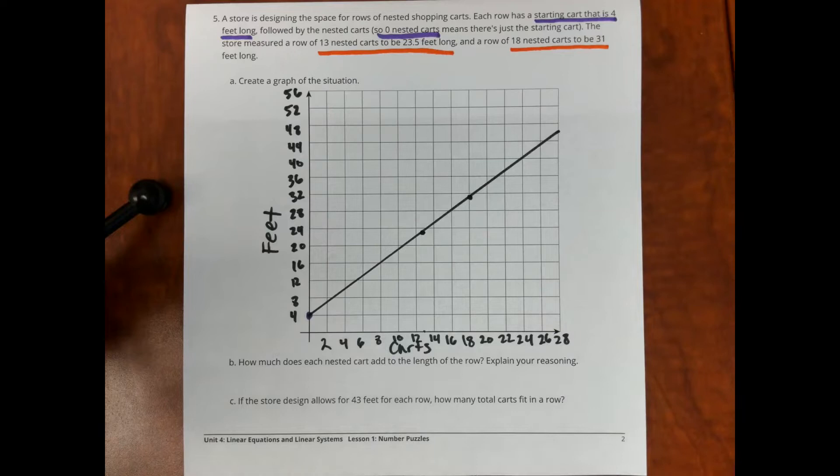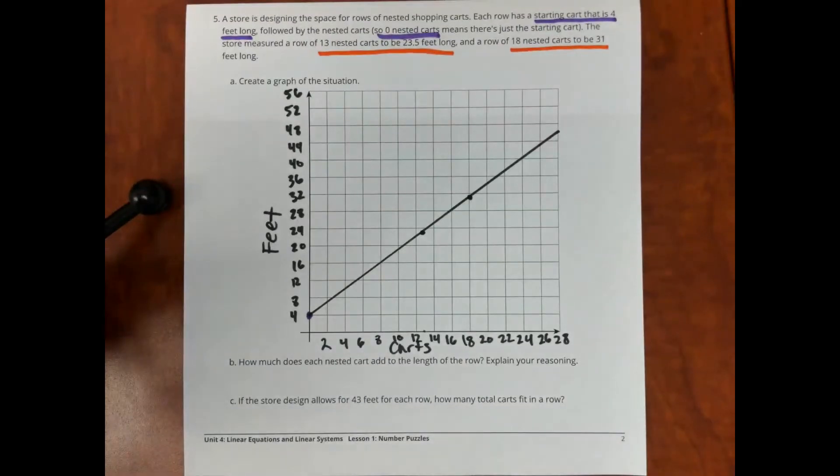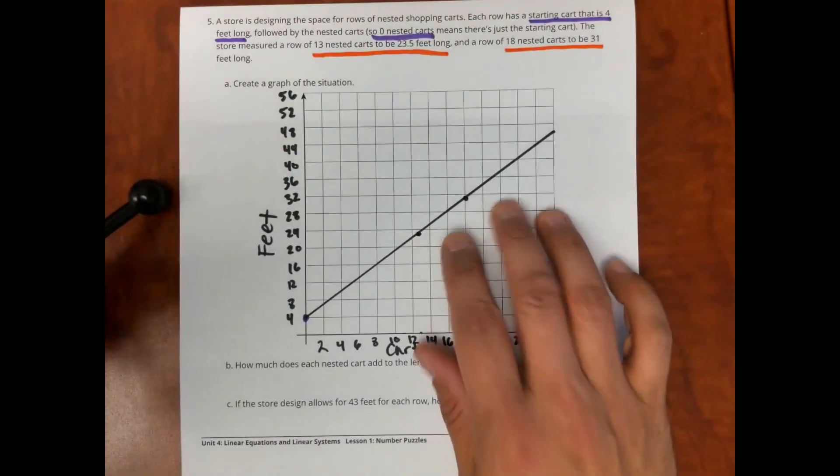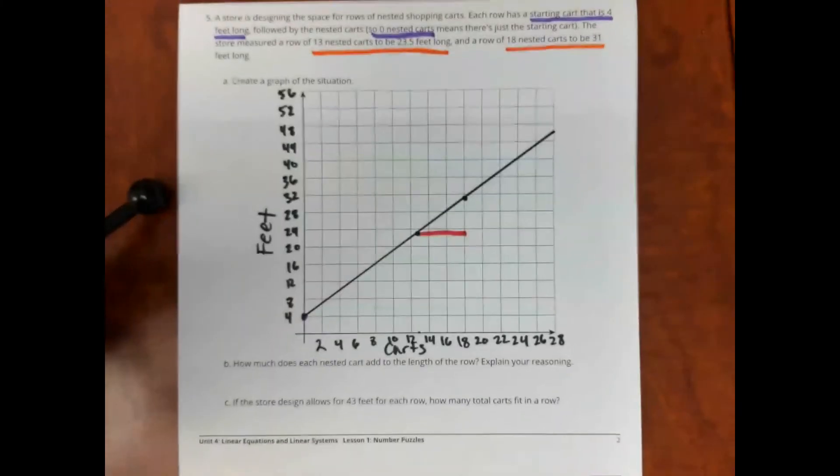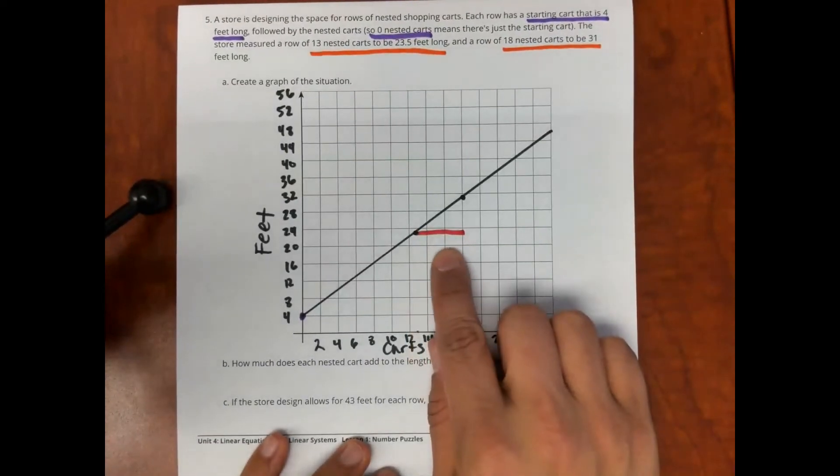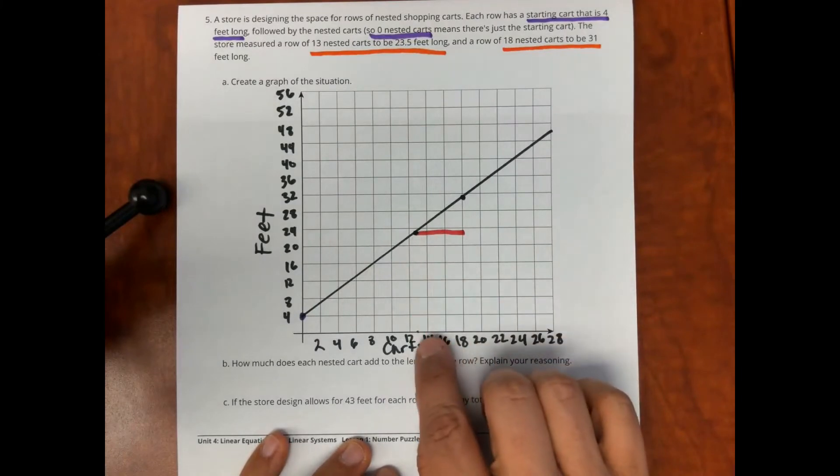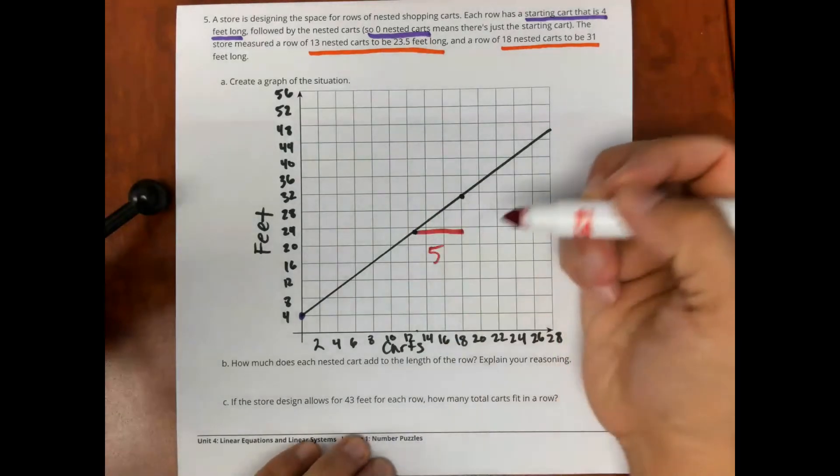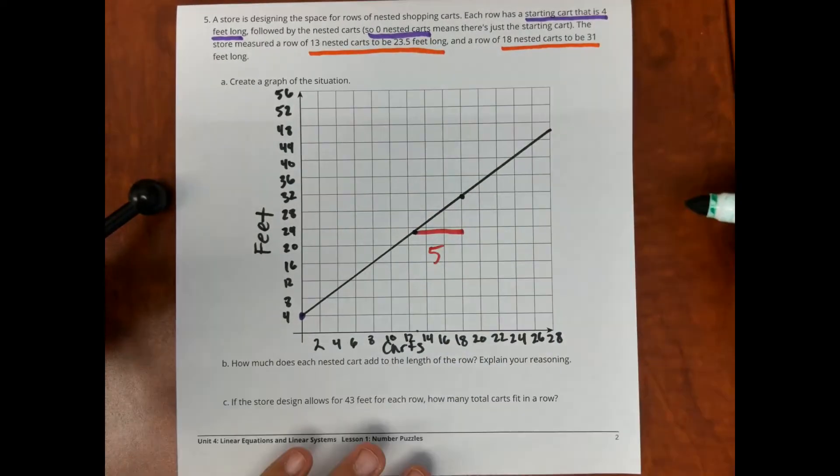Now, for question number two, how much does each nested cart add to the length of the row? Explain your reasoning. What that question is really asking me is for the slope of this line. Another way that you've seen it worded is rate of change. So, I really want to see the rate of change. And I'm going to draw a slope triangle here with the numbers. So, now this red line here is the change in the number of carts. How many carts is it from here to here? Well, that's from 13 to 18. That's five carts.